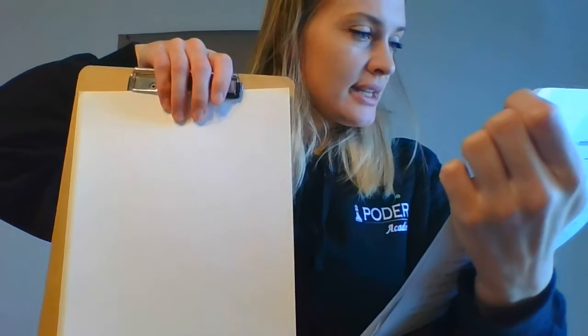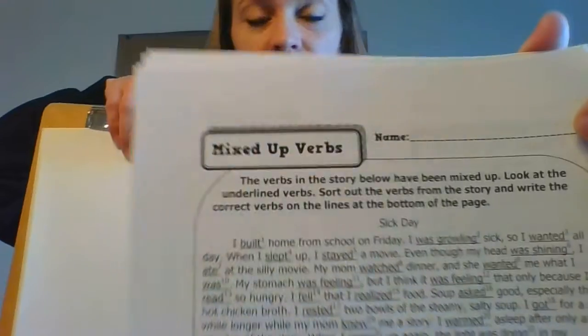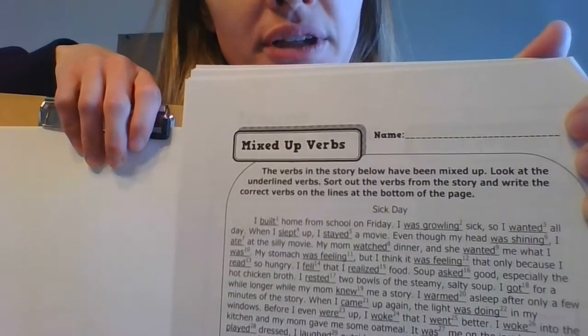Now mixed-up verbs — I wanted to make sure you saw this and knew how to do it. The verbs in this story have been all mixed up. Look at the underlined verbs, sort them out, and write the correct verbs on the lines at the bottom. What I would do is take all of the verbs you see and list them out on a separate piece of paper. So if 'built' is underlined, I'd write 'built' down.